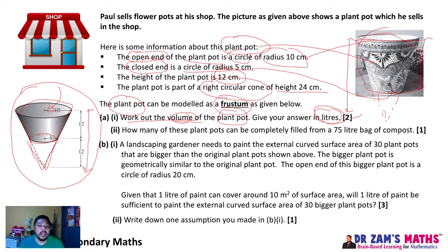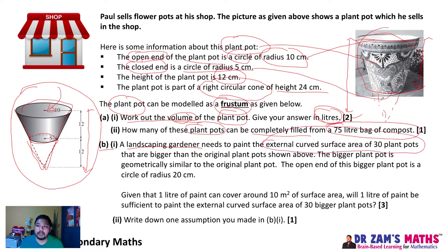You are supposed to find the volume of the plant pot. How many of these plant pots can be completely filled from a 75 liter bag of compost? You are asked how many plant pots you would need to fill if you have a 75 liter bag of compost. Part B is another application question that requires you to think hard and carefully. A landscaping gardener needs to paint the external curved surface of 30 plant pots which are bigger than the original pots shown above.